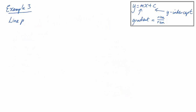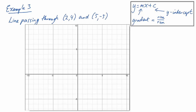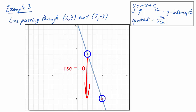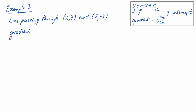For the third example, let's find the equation of a line passing through (2, 4) and (5, -5). Looking at the diagram with those two points, we draw the straight line through them and calculate the gradient. Going from left to right: for the rise, we go from 4 down to negative 5, so that's a rise of negative 9. The run is going from 2 to 5, so that's a run of 3. So the gradient is negative 9 divided by 3, which equals negative 3.